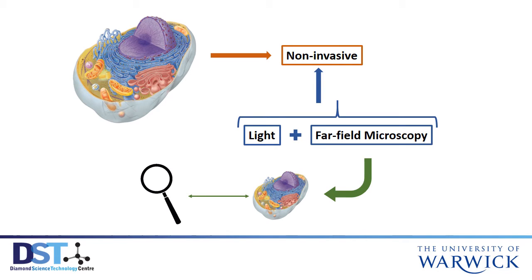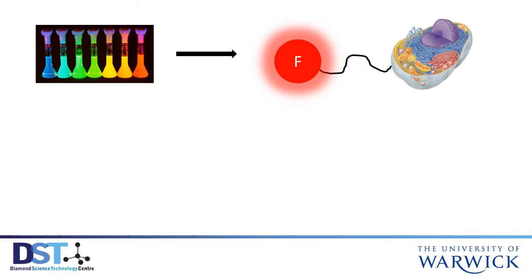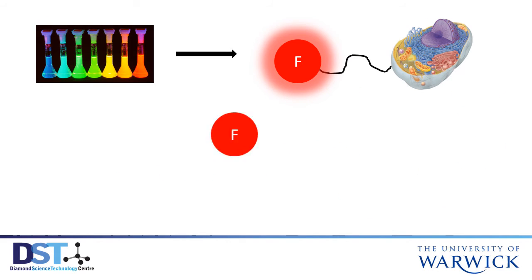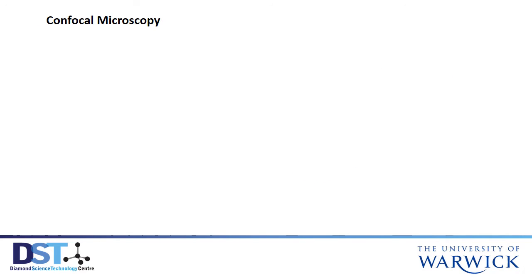Far-field simply means using a lens at a distance from the sample. Fluorescence of the sample makes it easier to observe because it emits light, and this can be artificially introduced by labelling the sample with fluorescent markers known as fluorophores. These fluorophores can be stimulated with a coloured laser so that they are excited and given energy, and sometime later they spontaneously release this energy by emitting light of a different colour.